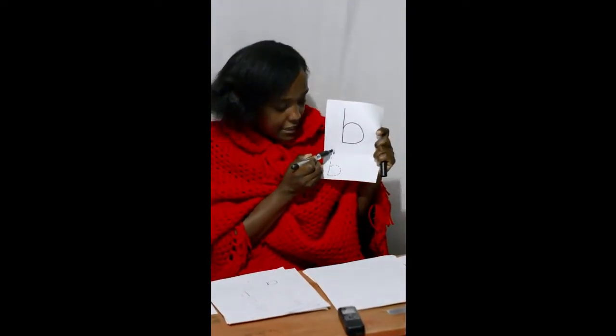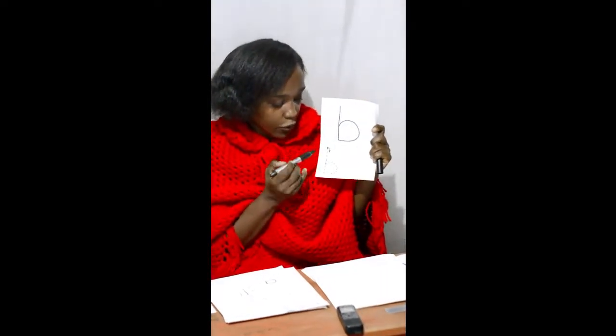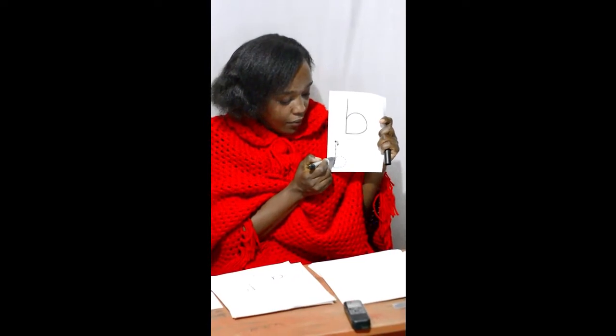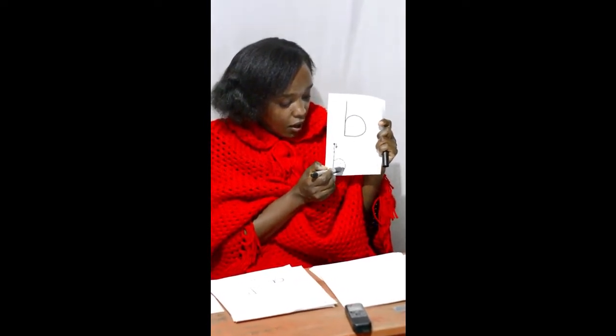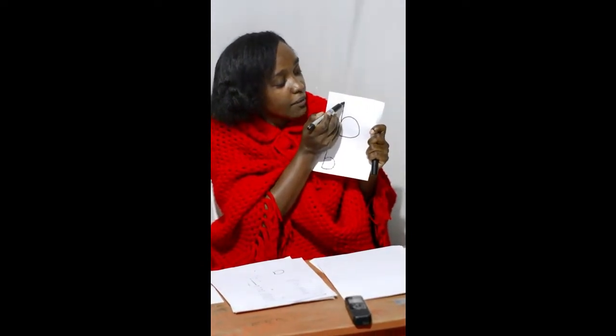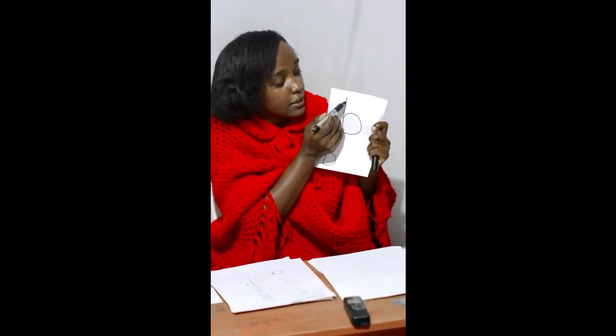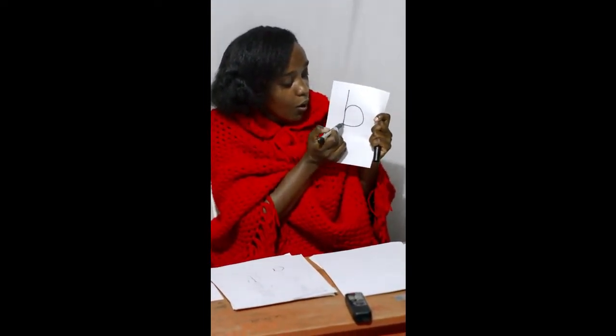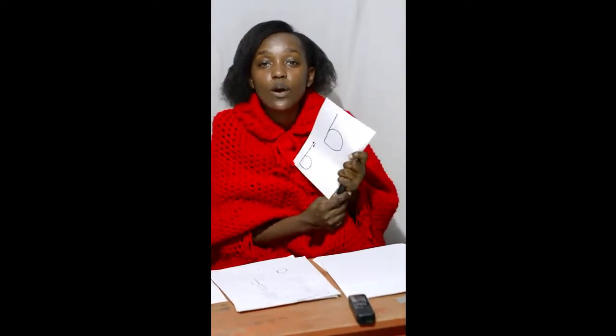Now I want to show you the formation of sound 'b'. You must start from here — so you go down, up, and round. Again, let's go together from this point: down, then up, then round. Very good! That is sound 'b'.